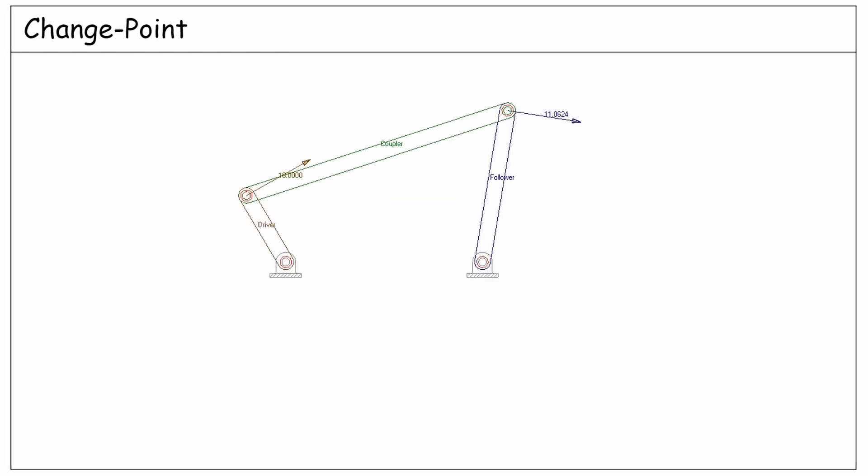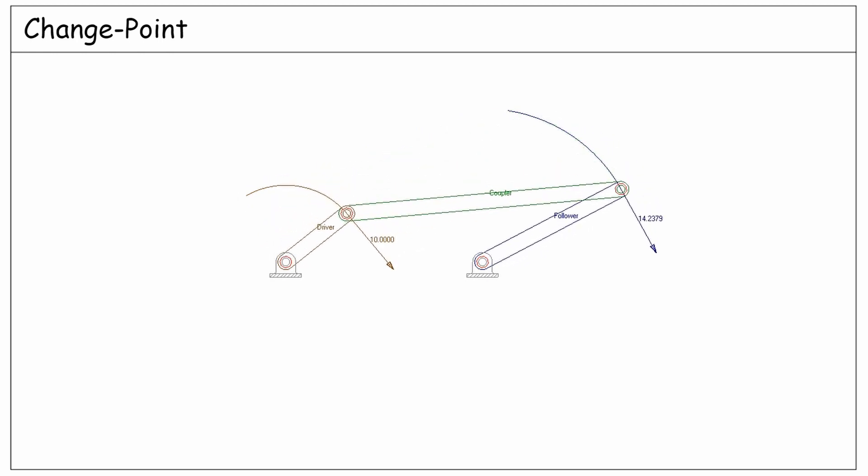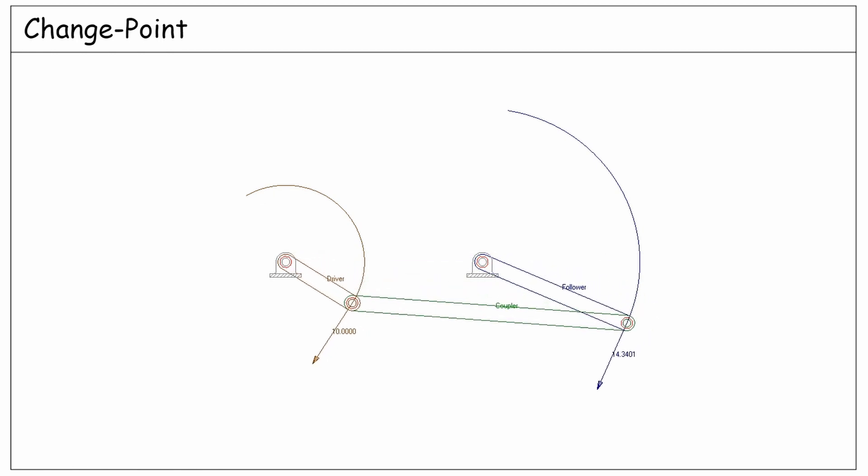Now let's demonstrate this in a working mechanism and notice the two possible motions that might happen. As you see, first time it moves this way at the change point.